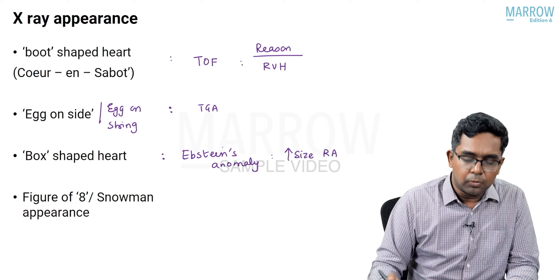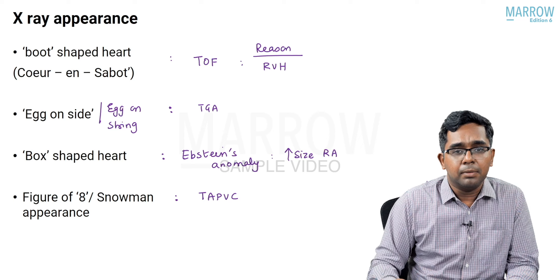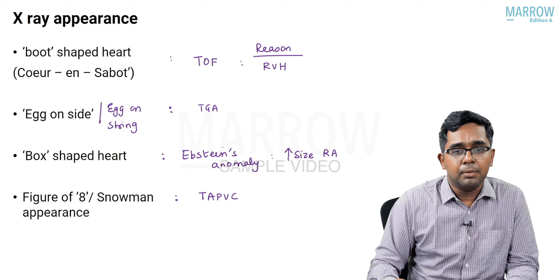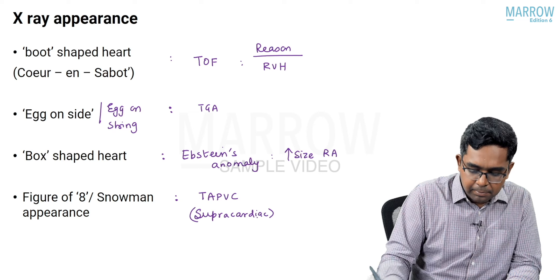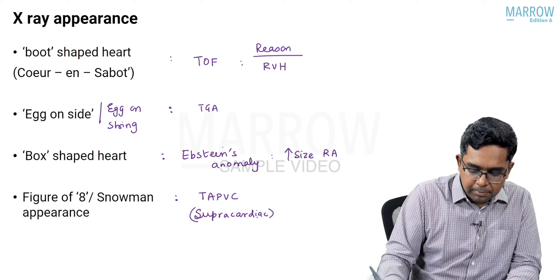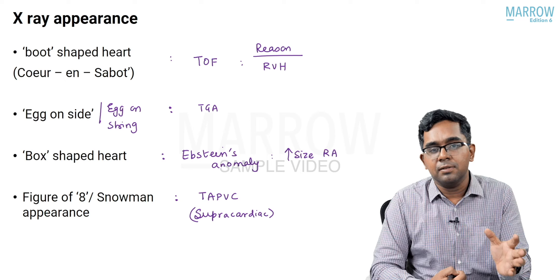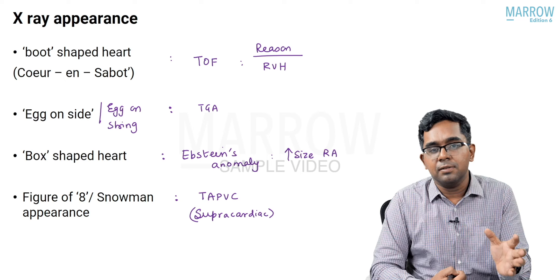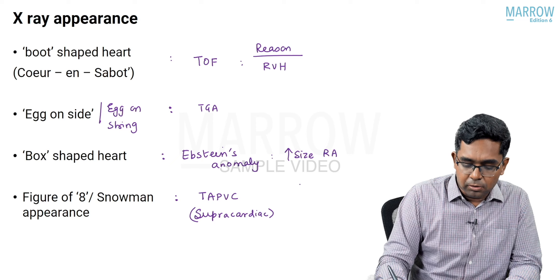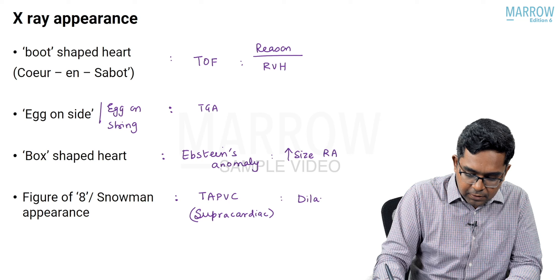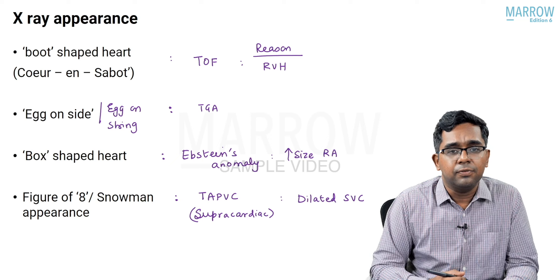The figure-of-8 or snowman appearance is noted in TAPVC — total anomalous pulmonary venous connection — specifically in the supracardiac subtype. In supracardiac TAPVC, the pulmonary veins go above the heart, join the SVC, and drain into the right atrium, causing the superior vena cava to dilate, giving rise to the figure-of-8 or snowman appearance.